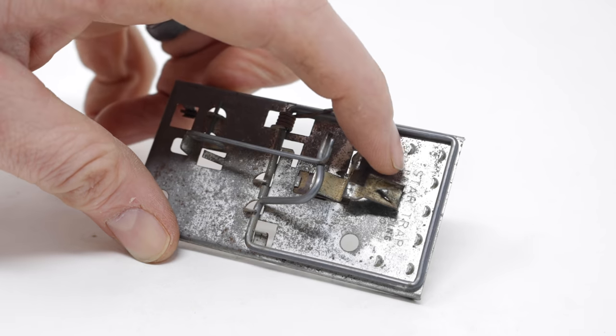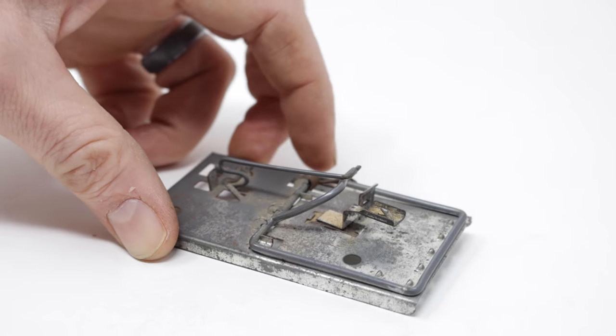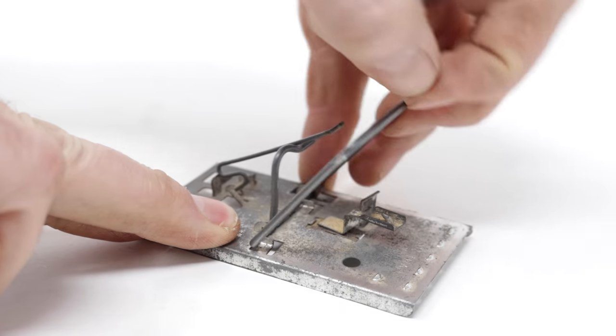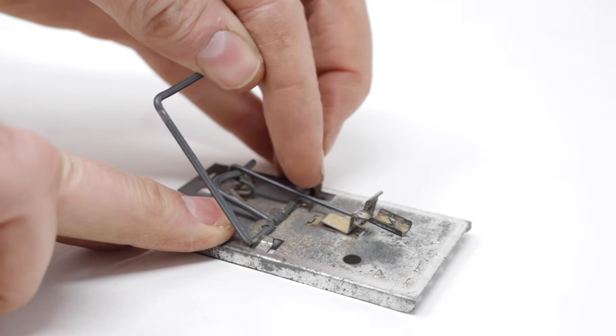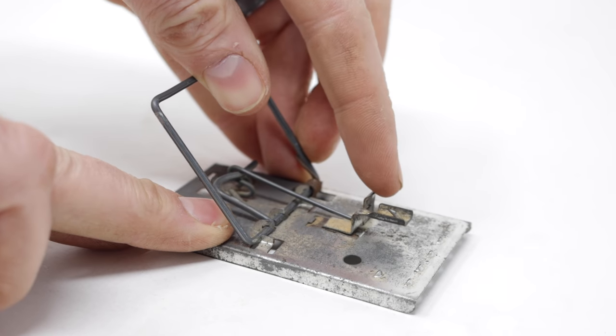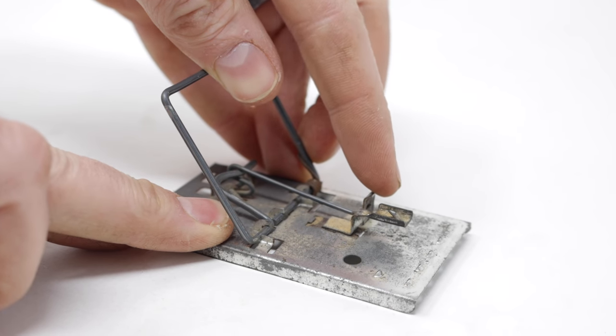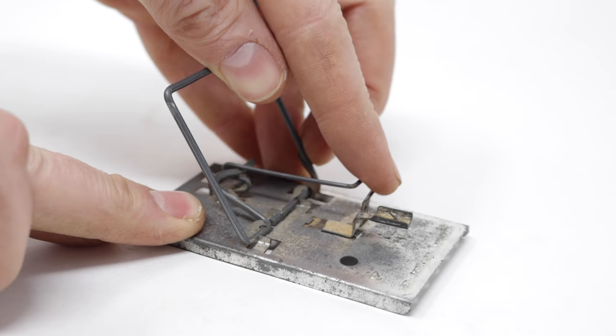It even says Star Trap right there, right below the metal teeth. Now to set it, we'll pull back the kill bar, and this lever locks in the trigger. Now this trigger is barely connected. It's floating on a magnet, making it one of the most sensitive triggers ever.